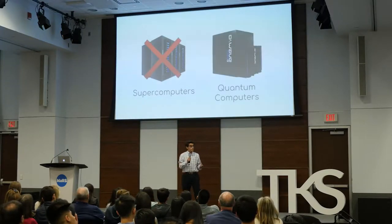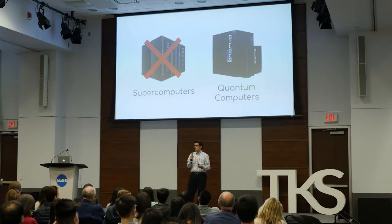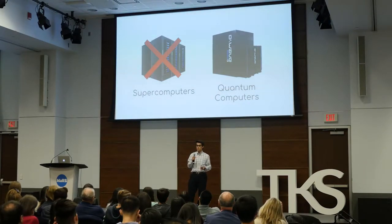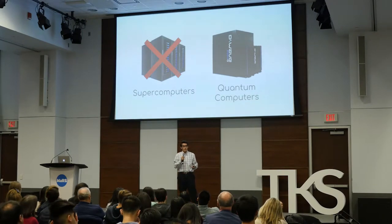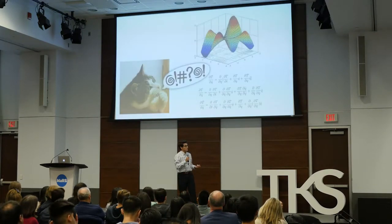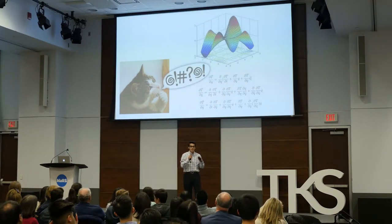With the recent invention of quantum computers, we've actually had a glimpse at what the solution to this problem might be. To understand why, think about asking a cat to understand multivariate calculus. Their brains are not wired that way — they literally cannot have the capacity to understand those ideas.